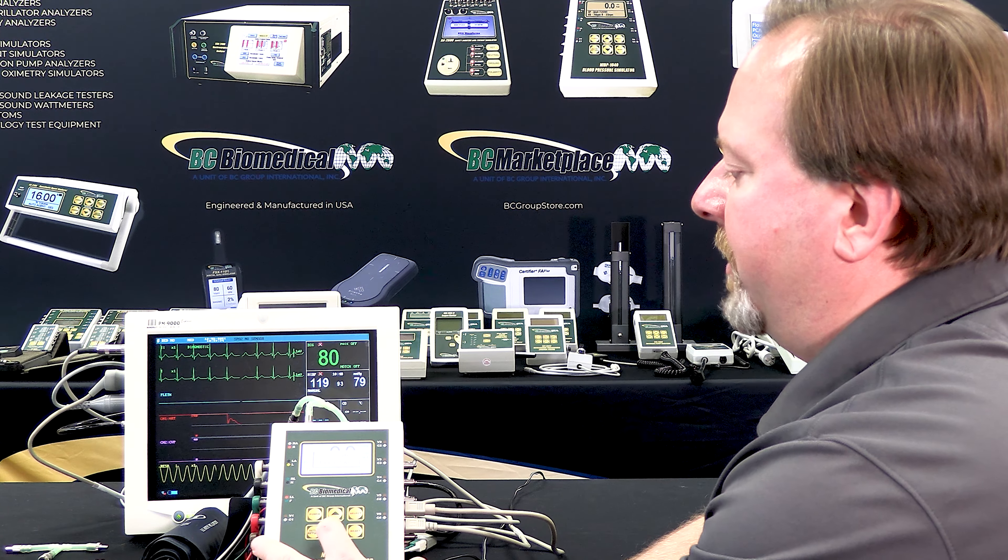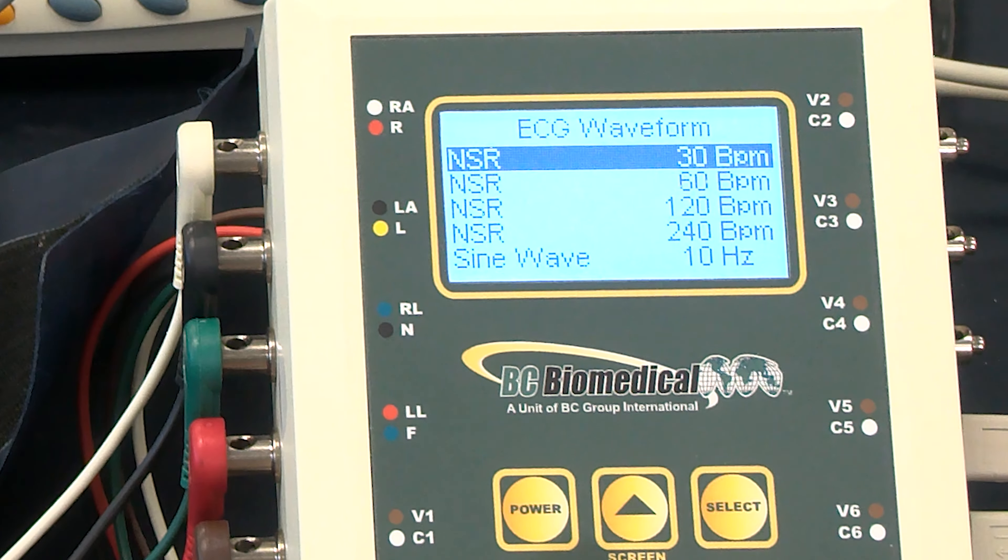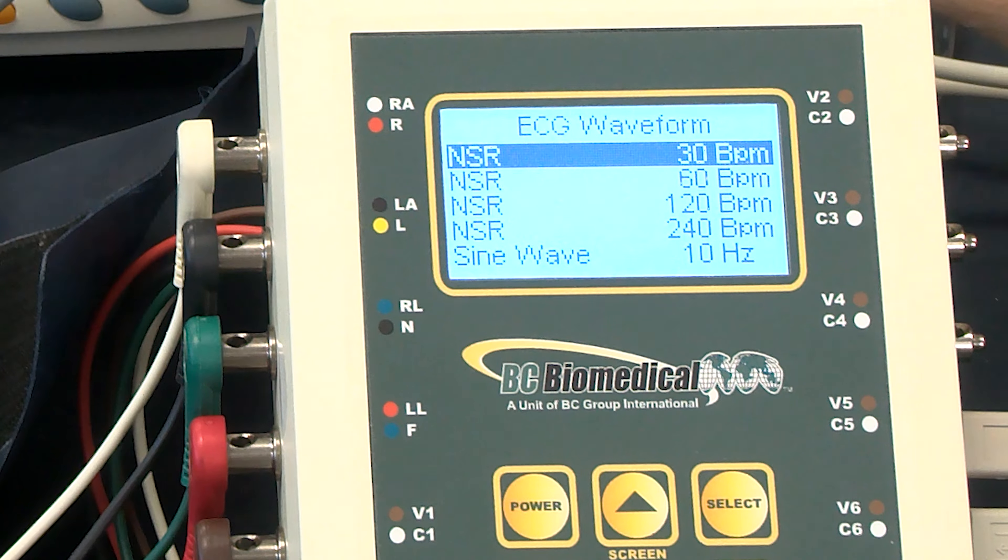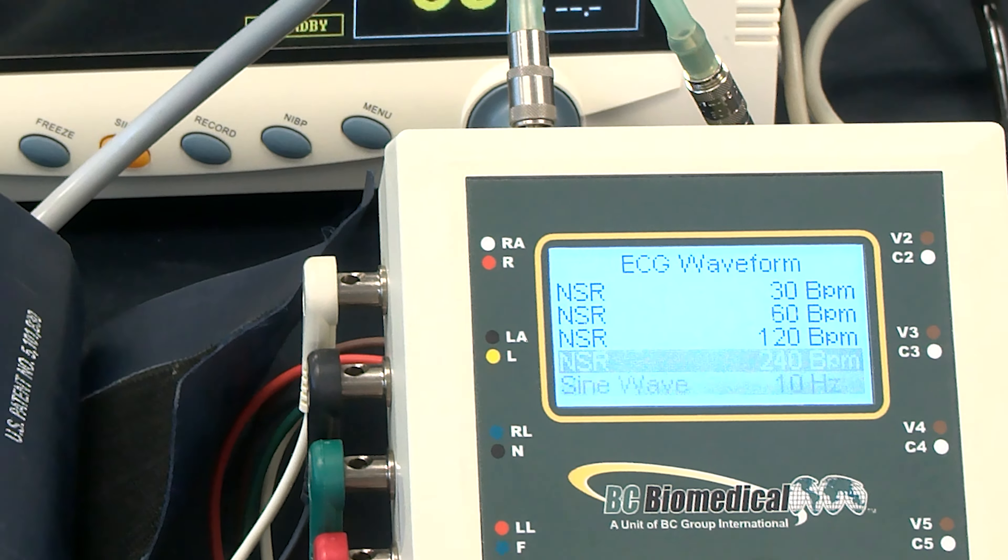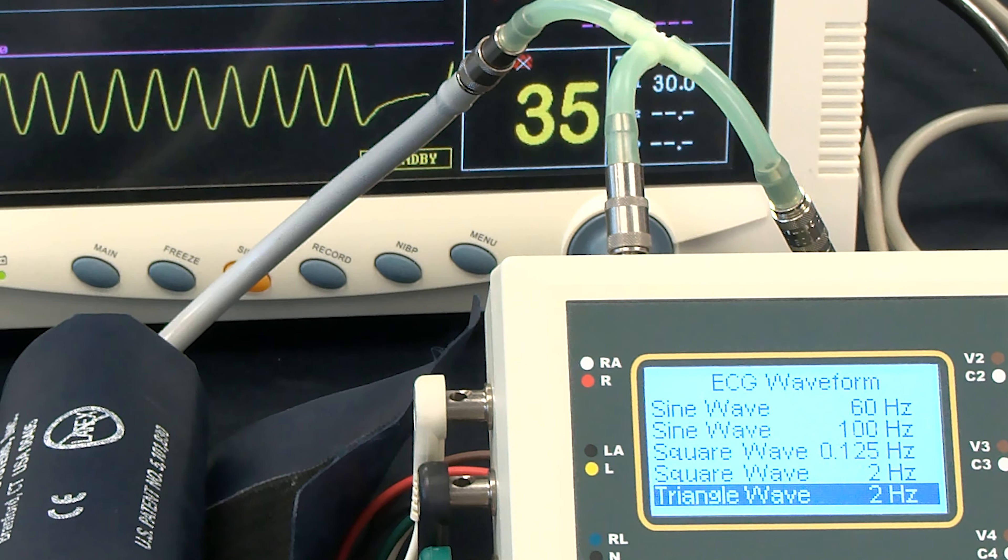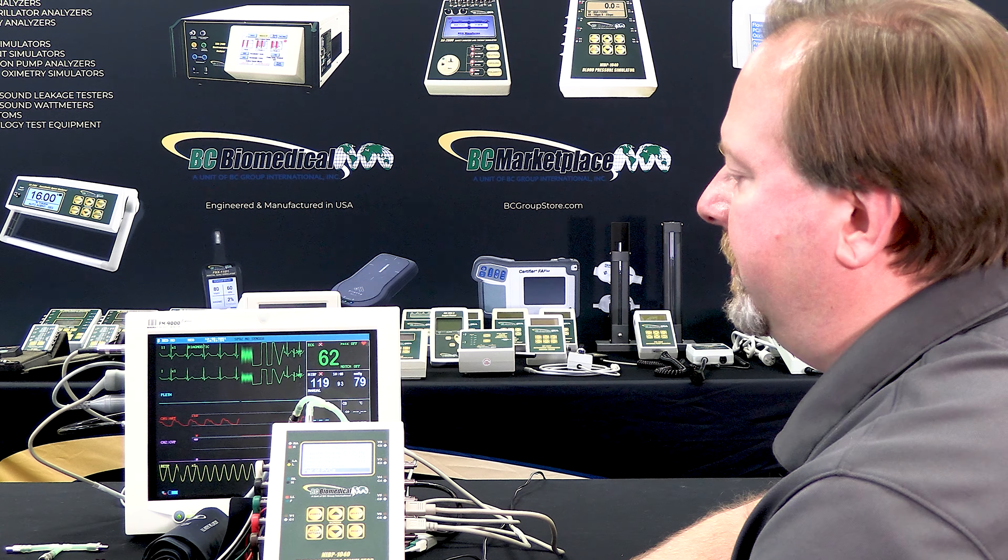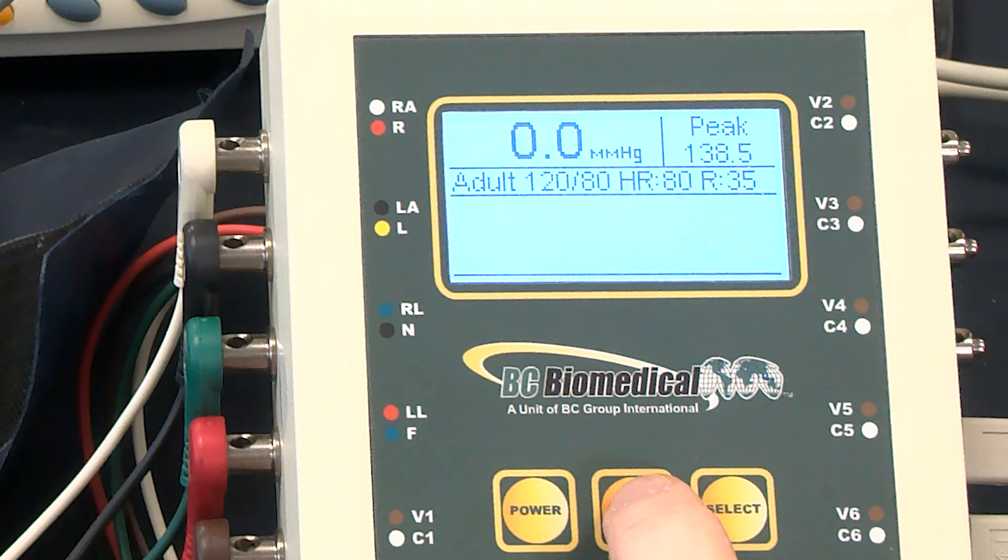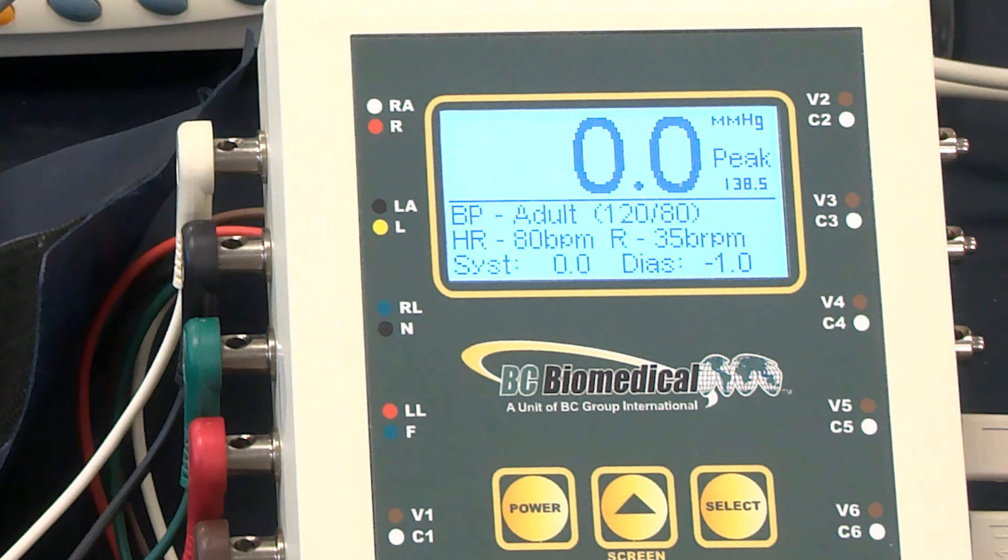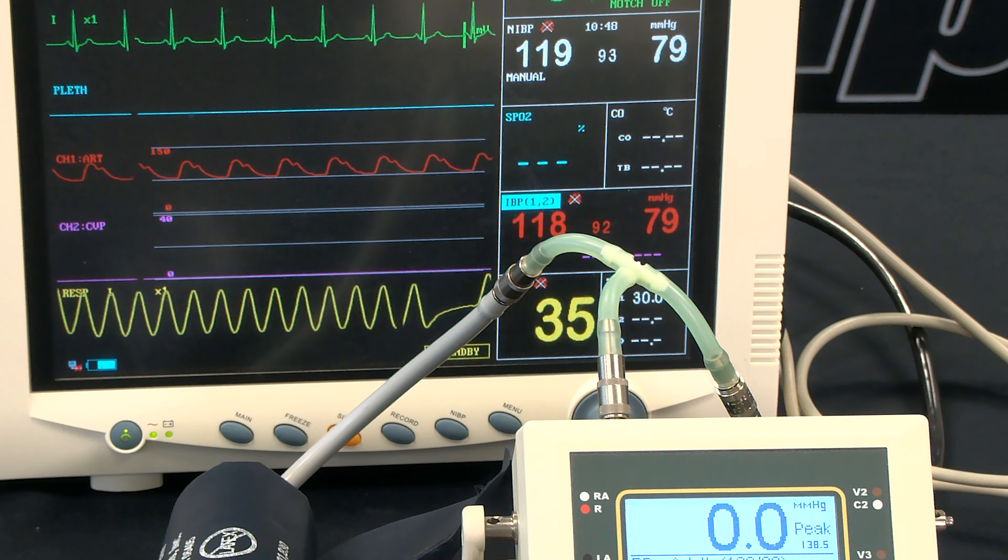Additionally, when we go to the ECG simulation screen, the IBP rate will be synchronized with either the normal sinus rhythm or the arrhythmia waveforms. The IBP arrhythmia will also be shown to the monitor, and again to get back to the main screen, we press the up arrow and we get back to our home screen, and we can see that it simulates a normal sinus rhythm in the invasive blood pressure at 120 over 80.